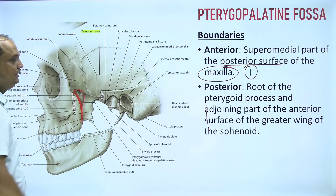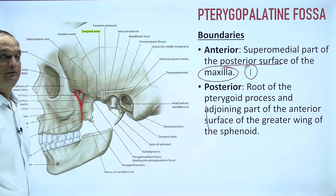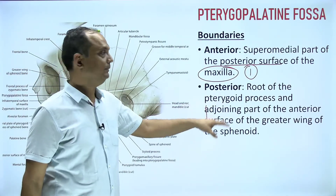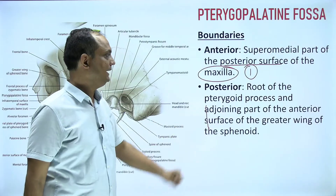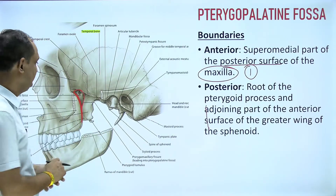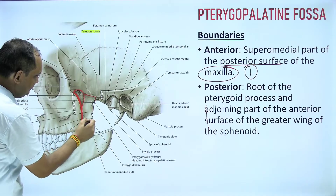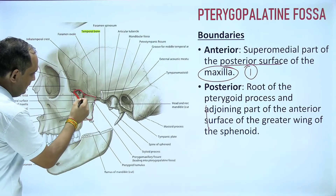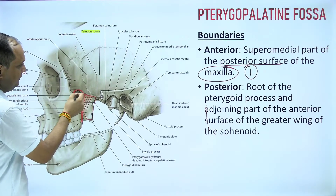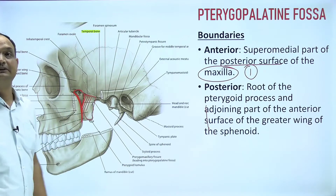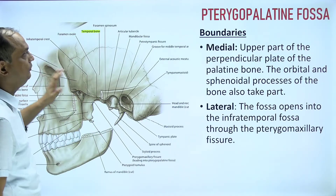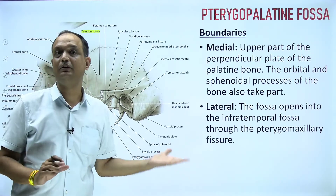The posterior boundary is formed by the root of the pterygoid process and part of the greater wing of the sphenoid bone. Deep to the pterygoid process, you will have the pterygopalatine fossa.